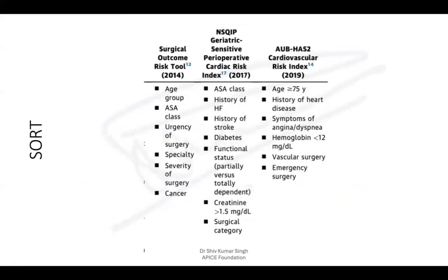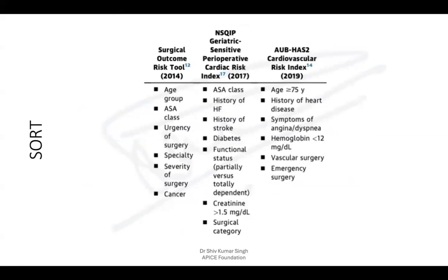There are other risk tools, such as the Surgical Outcome Risk Tool, or SORT, which looks at age group, ASA class, urgency of surgery, surgical specialty — cardiac, vascular, thoracic — severity of surgery, and presence of cancer. It is useful and can be used in combination with the RCRI.